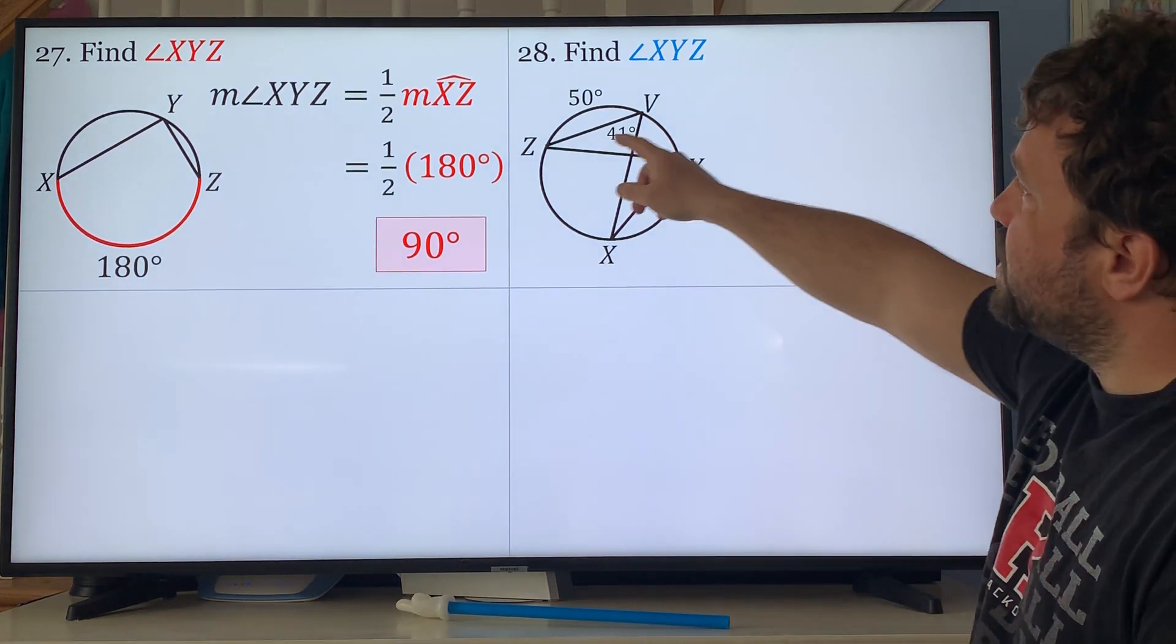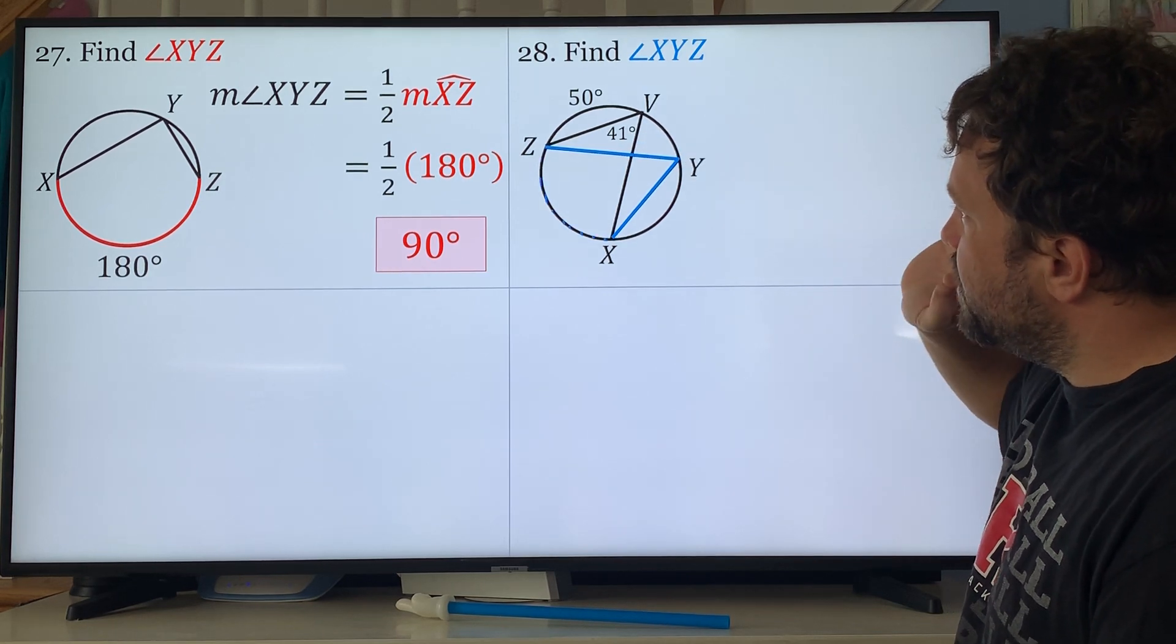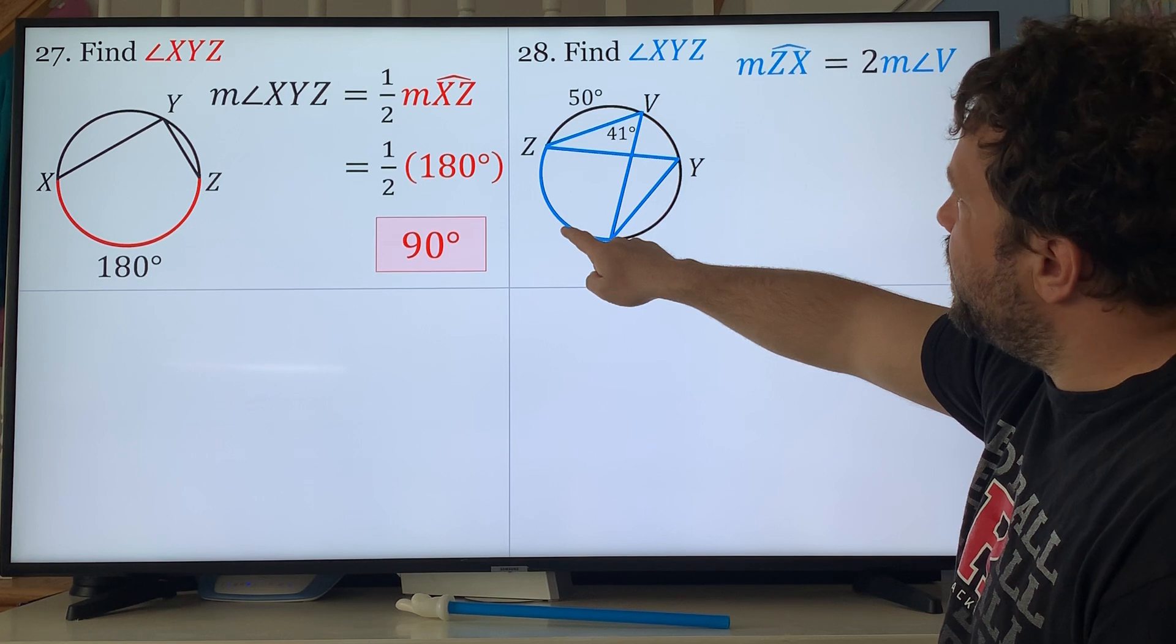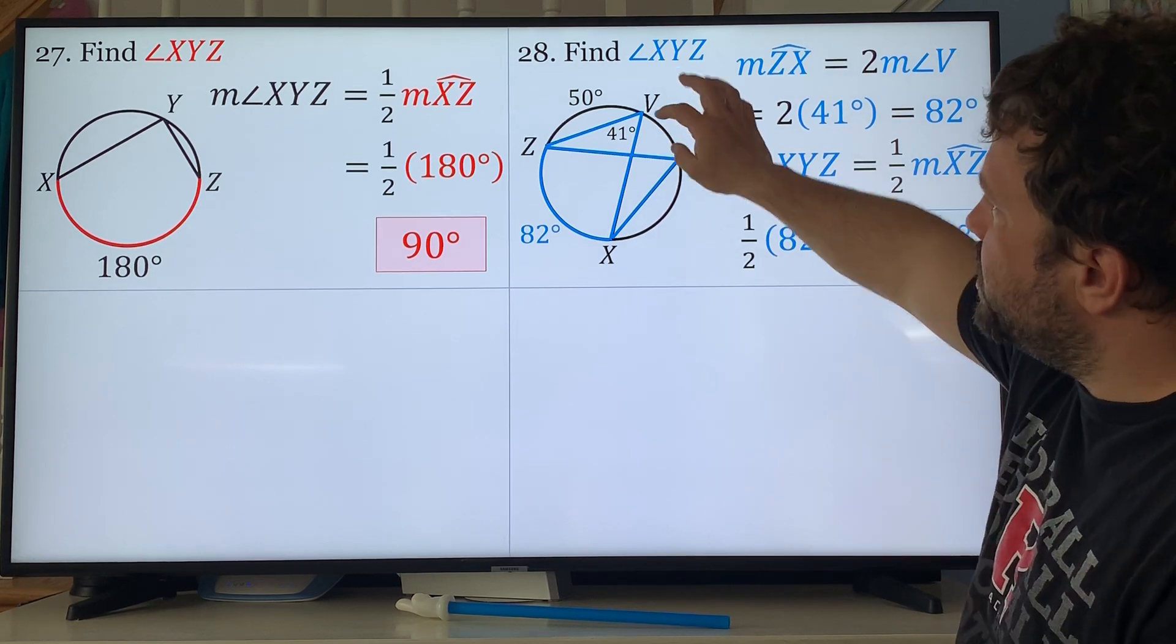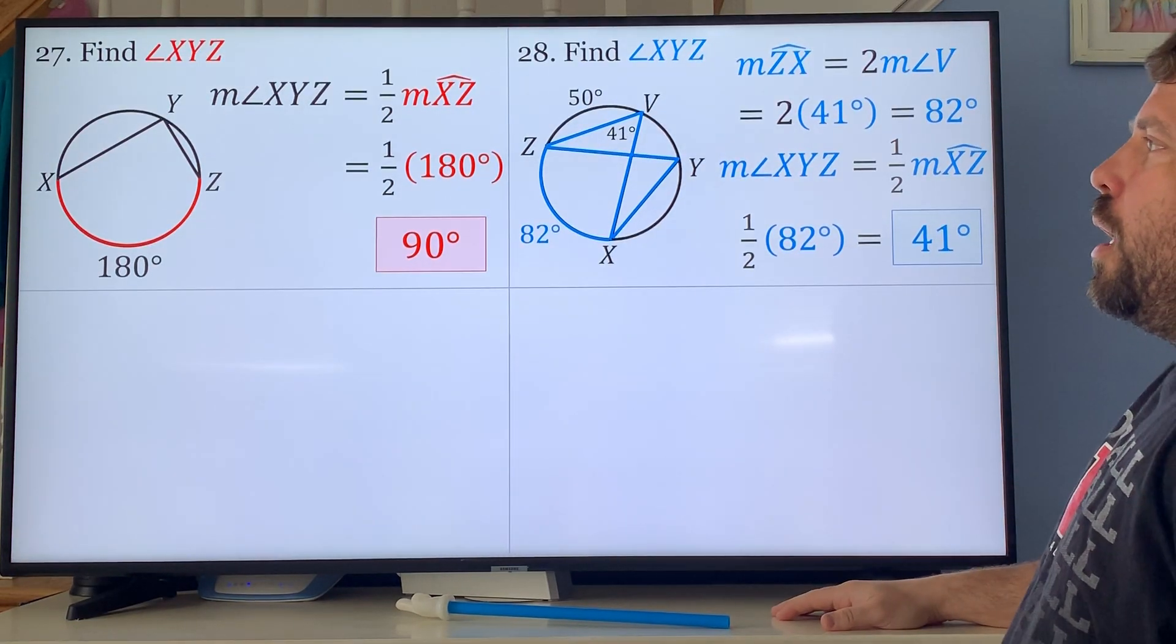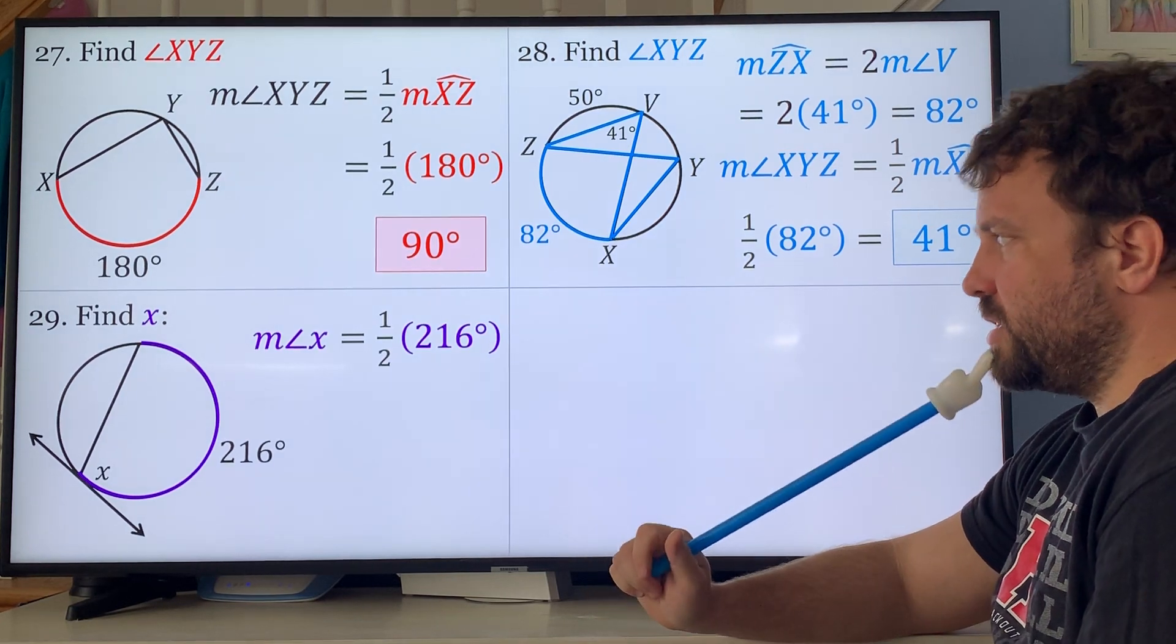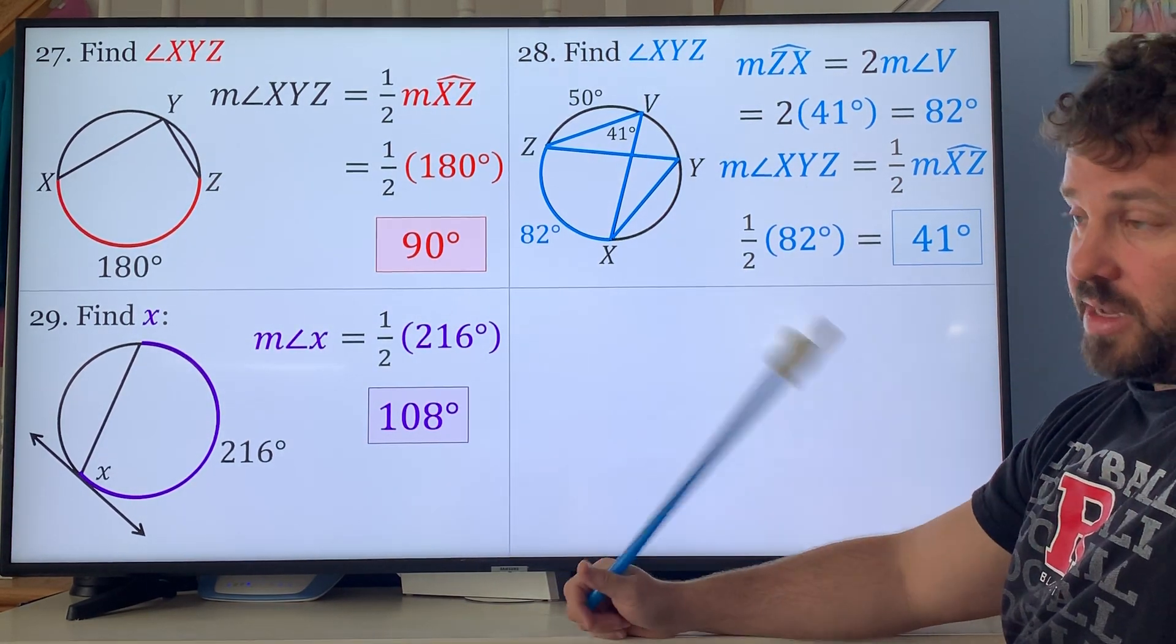Problem 28: find x. This arc is YZ, this is 41, this is what we're finding. This deals with this arc, these two endpoints. The 41 endpoints are on the same arc. So if this is 41, this you could find out to be 82. Half of 82 is 41, or you could just say two angles that share the same arc are equal. Either way gets you the right answer. Problem 29: find x. The inscribed angle is half of 216, which is indeed 108. Inscribed angle is half of arc unless it's a central angle, then it's equal.